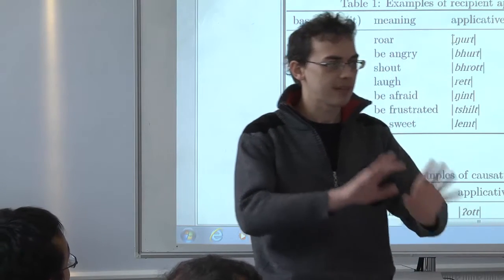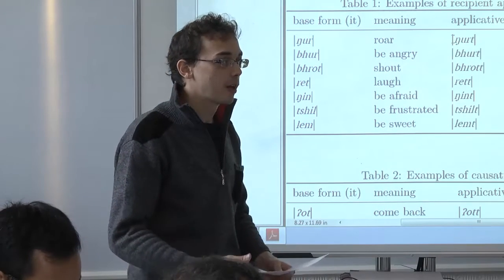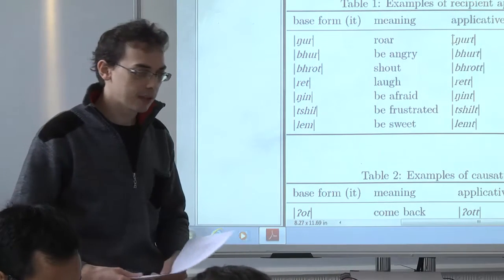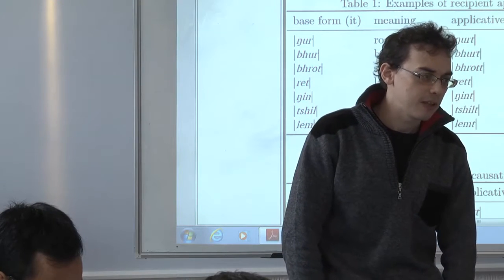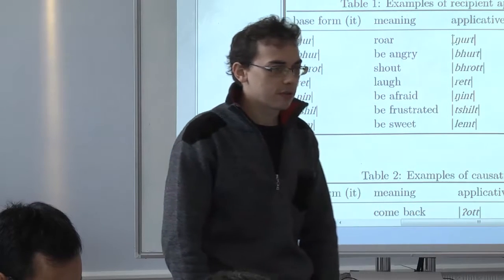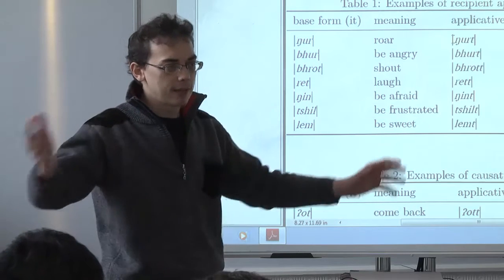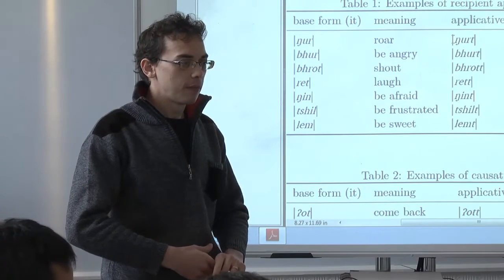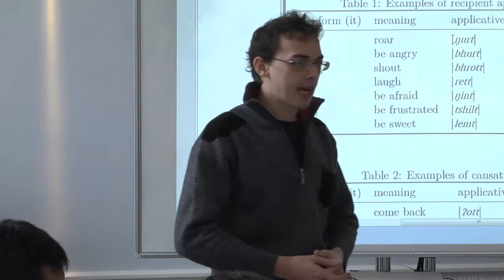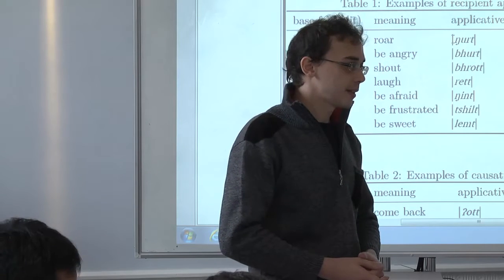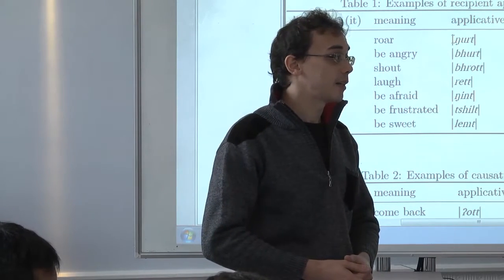In European languages, generally we don't have antipassive for one reason, because nearly all European languages have widespread agent-preserving lability. So, basically most transitive verbs, whether in English or French, you can omit the object, and it's interpreted as meaning an unspecified object. So you can say, I eat, I eat an apple, I eat means I have a meal.